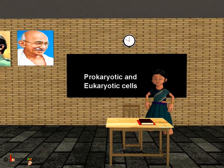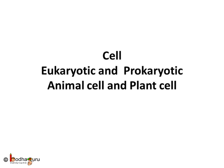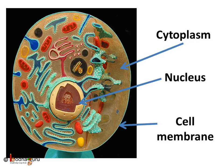Good morning children. Now that we know what is a cell, let's learn and compare different types of cells. We already know a cell is made of protoplasm which is enclosed by a thin cell membrane. The protoplasm is further made of cytoplasm and nucleus. The nucleus is generally spherical in shape and is located at the centre of the cell. This nucleus carries genes, controls protein production and also acts as a control centre for most of the activities in the cell.